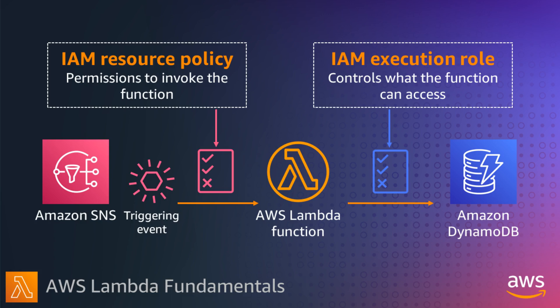The invoking entity may be a user, role, another AWS service, or another AWS account. For example, if an Amazon SNS topic invokes a Lambda function, you need to configure Lambda permissions to allow SNS to invoke the function. Resource policies also make it easier to grant access to the Lambda function across separate AWS accounts. For example, you can use a resource policy to allow S3 in one account to invoke a function in another.